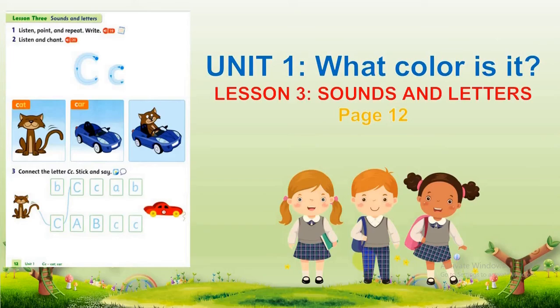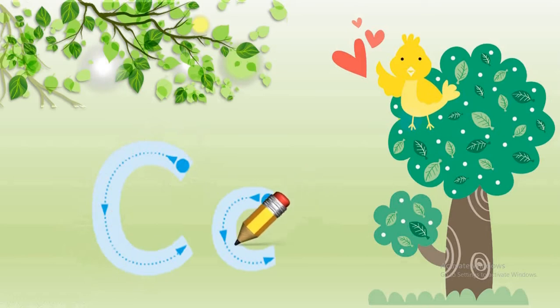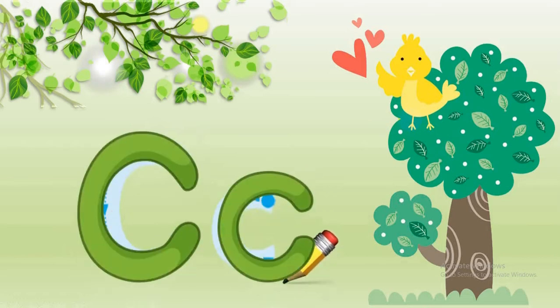Today we learn Unit 1: What color is it? Lesson 3, Sounds and Letters, page number 12. Letter C. Now listen to the ABC song.